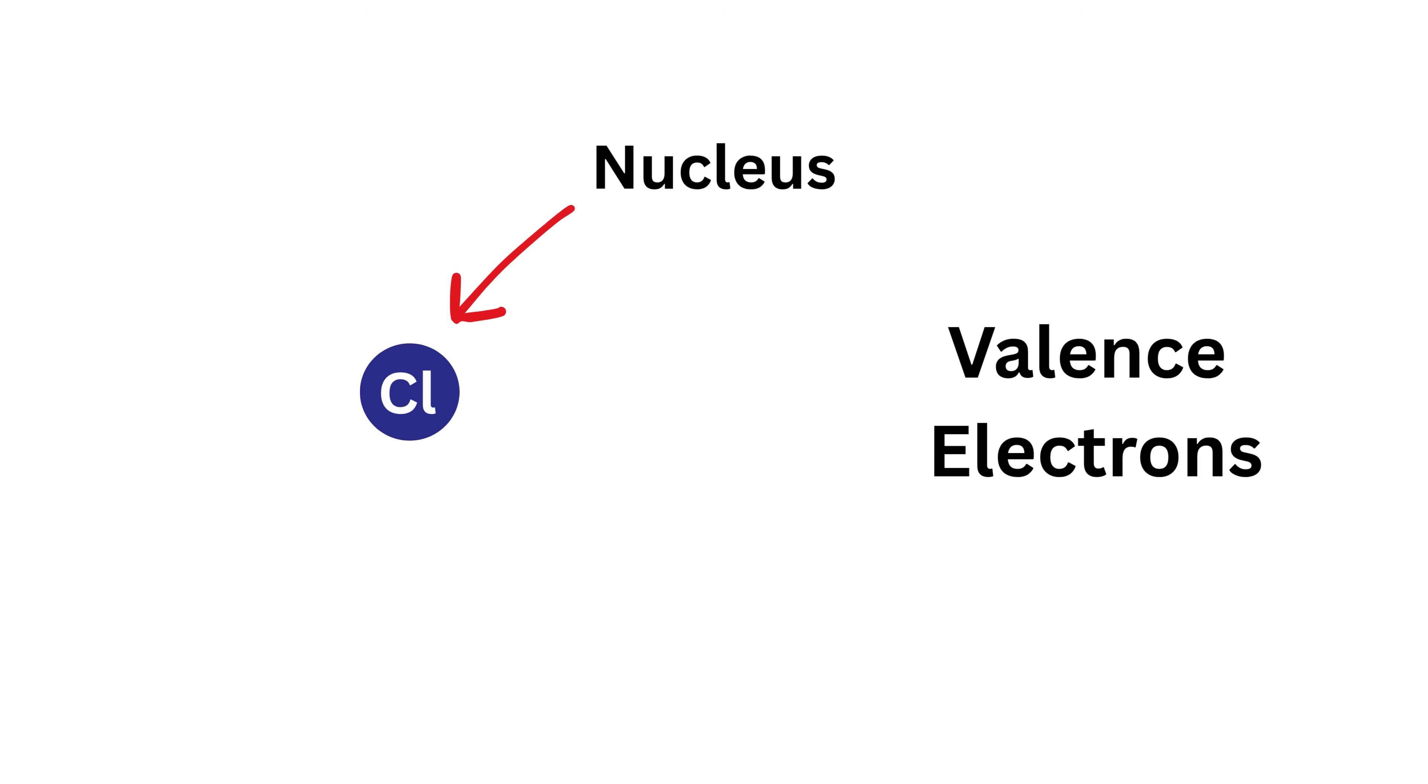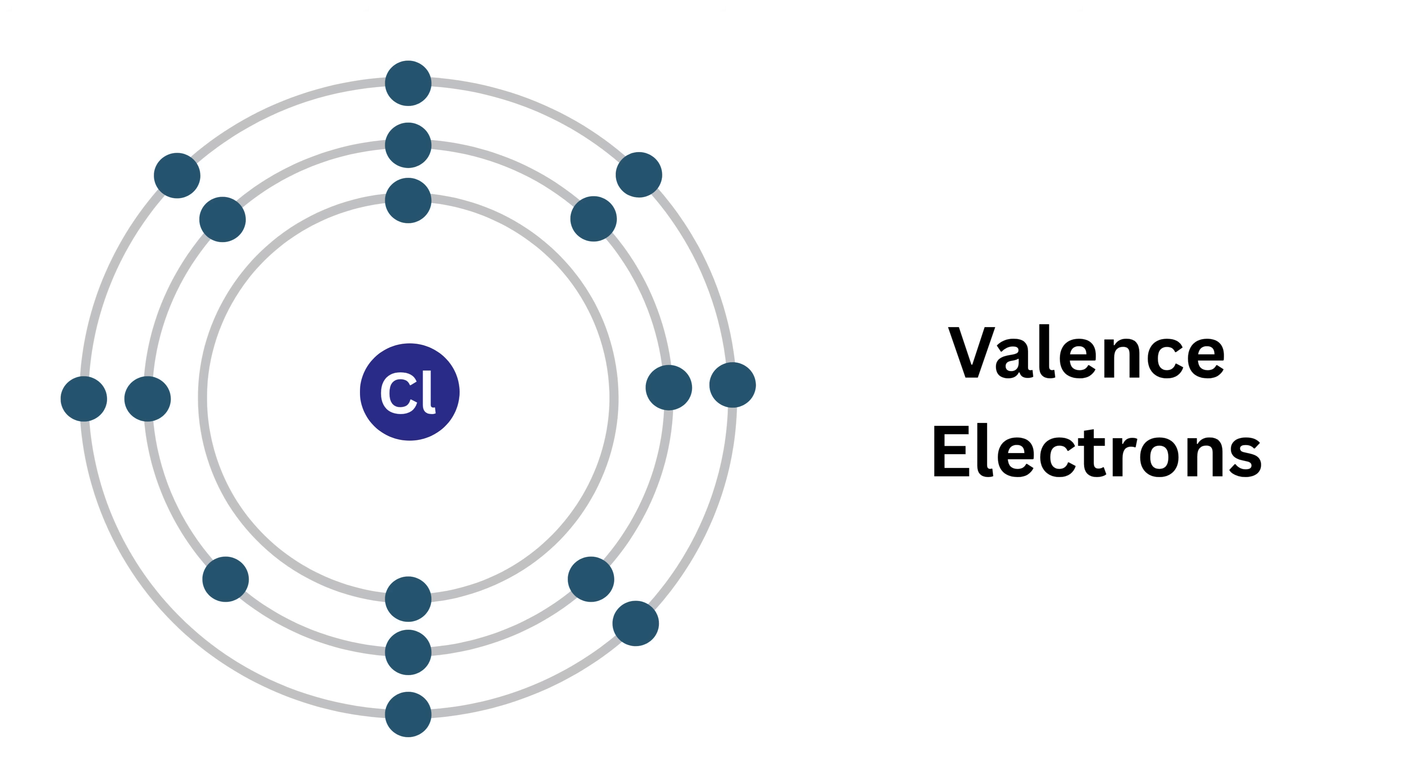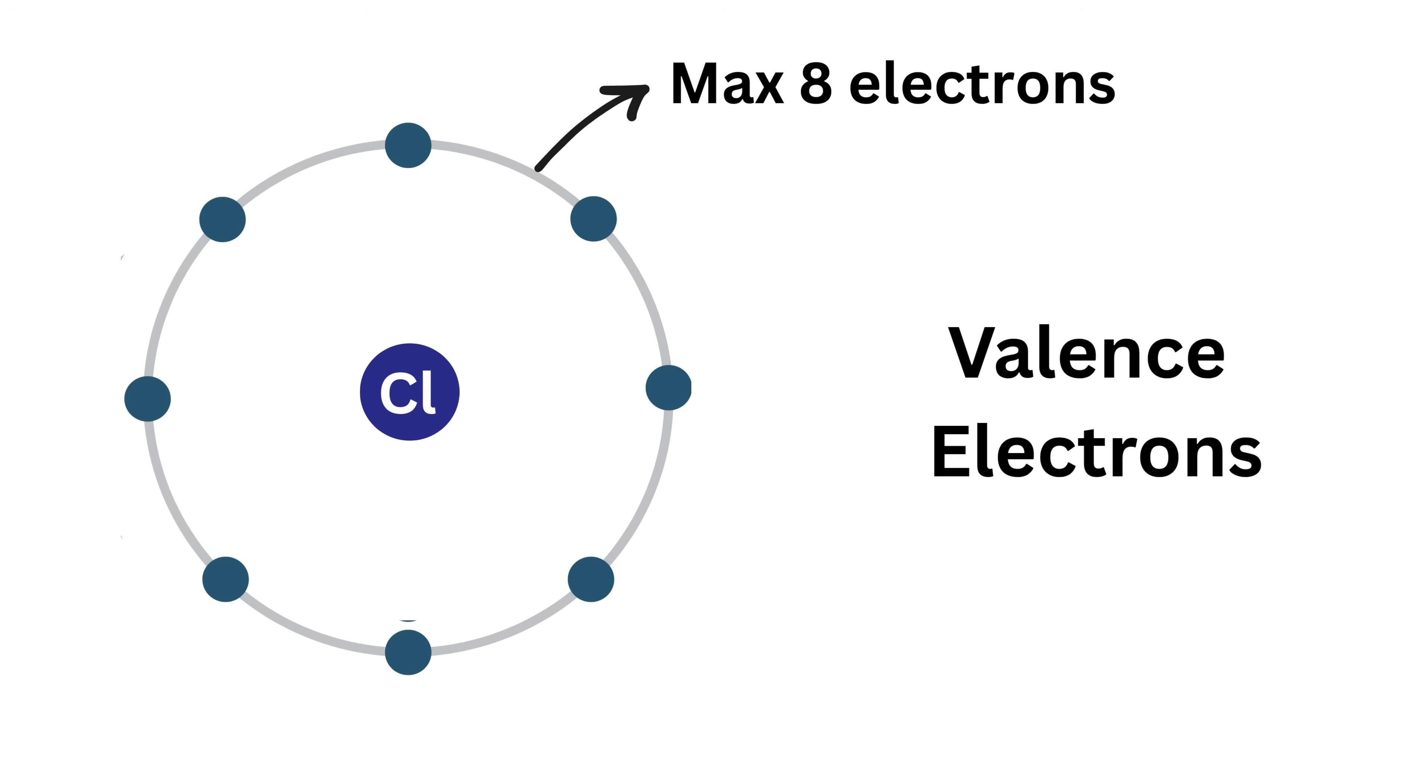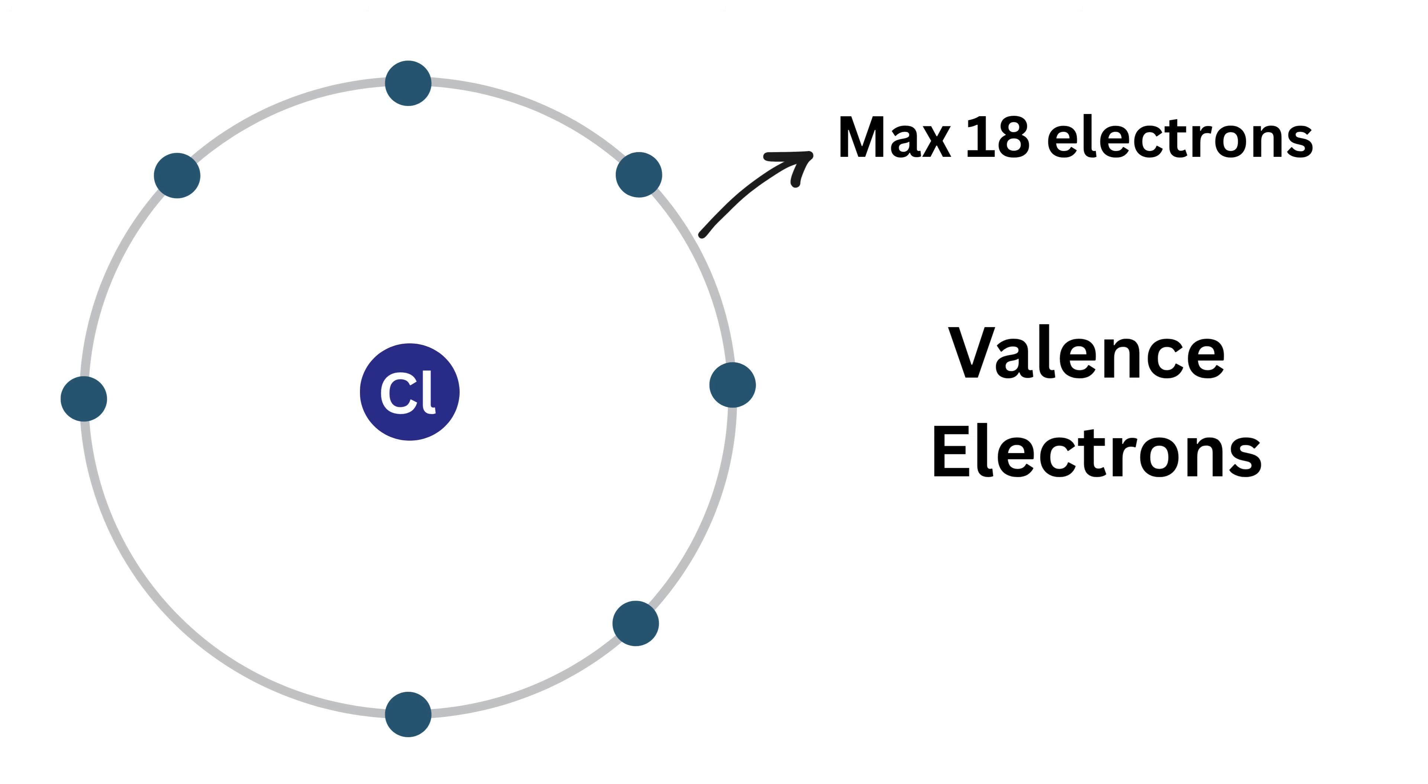Every atom has a tiny central nucleus surrounded by electrons that move in specific paths or energy levels called shells, just like layers of an onion. The shell closest to the nucleus can hold only two electrons, the next one can hold eight, the one after that can hold a maximum of 18 electrons, and so on.